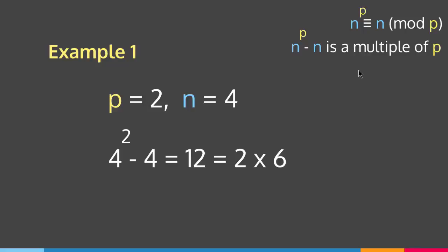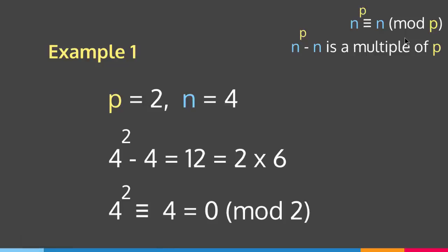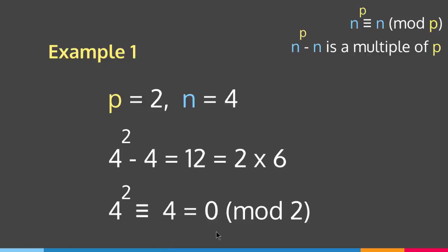Now let's verify the congruence form: n to the p should be congruent to n mod p, with n = 4 and p = 2. So 4 squared equals 16, and 16 mod 2 equals 0. Since 0 and 4 are in the same congruence class mod 2, we have 4 squared is congruent to 4 mod 2. ✓